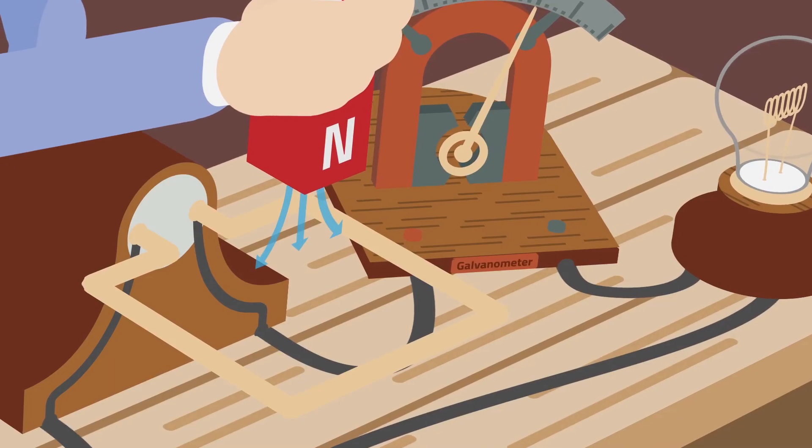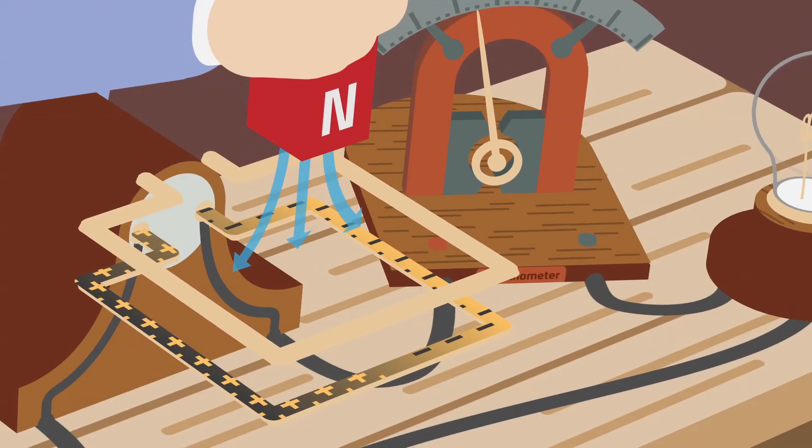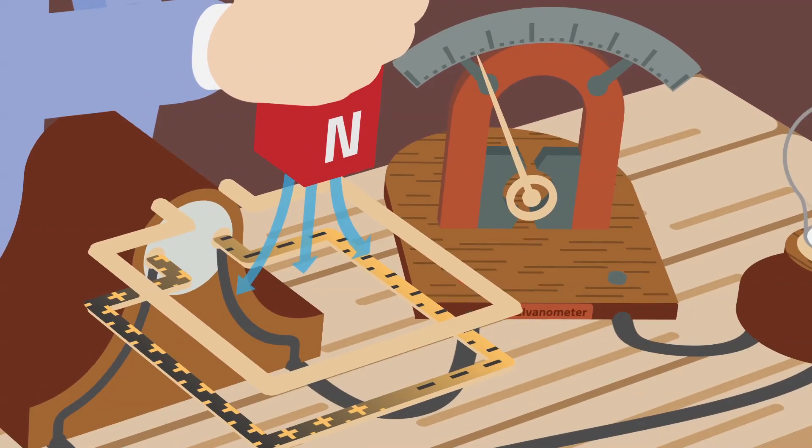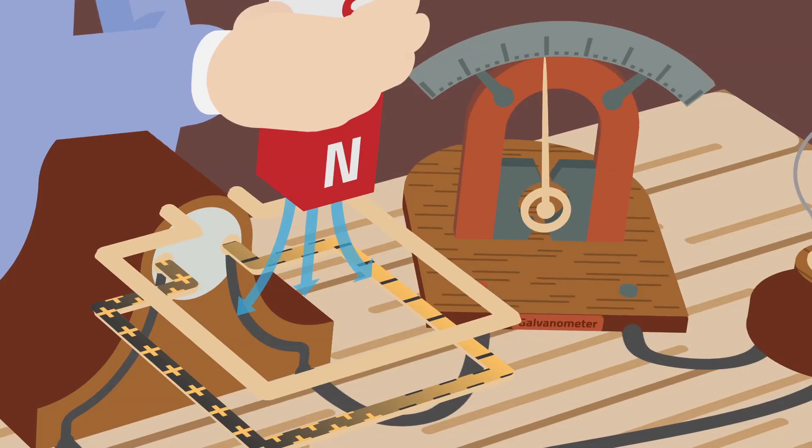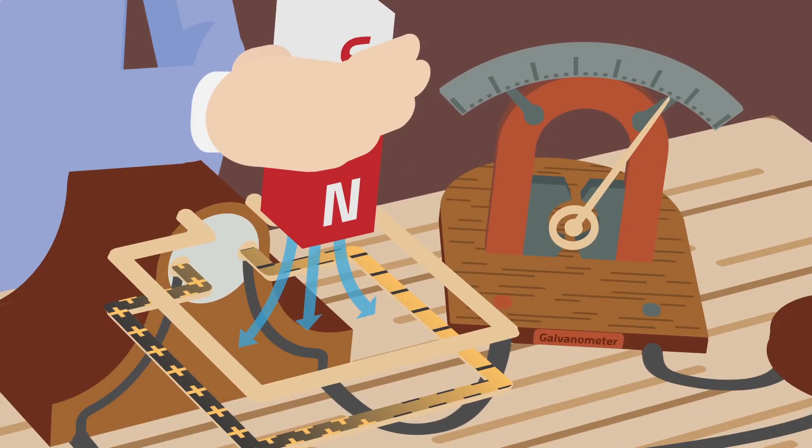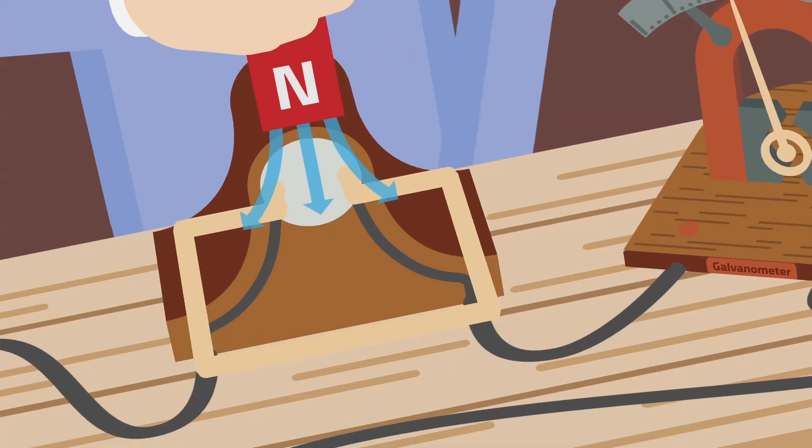Faraday set up an experiment. He moved a magnet over a copper winding and measured a difference in potential between both ends of the winding. In other words, a time-varying magnetic field induces a voltage in the copper winding, and the winding becomes in fact a voltage source.